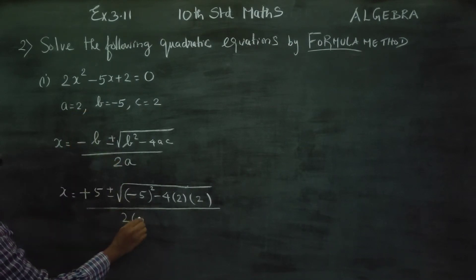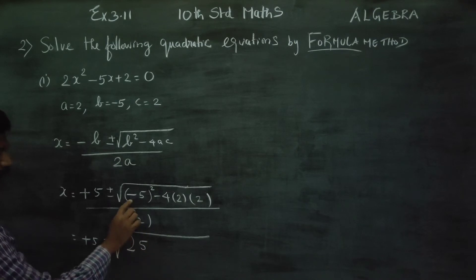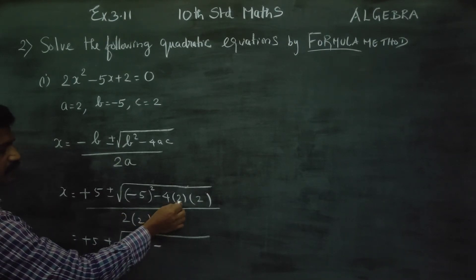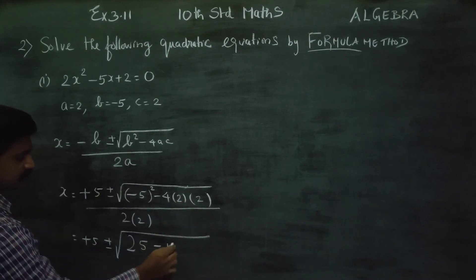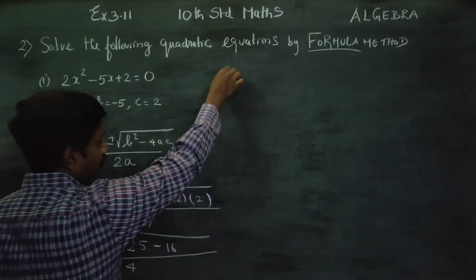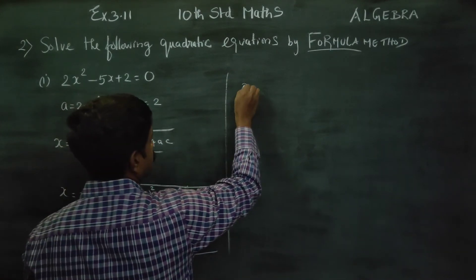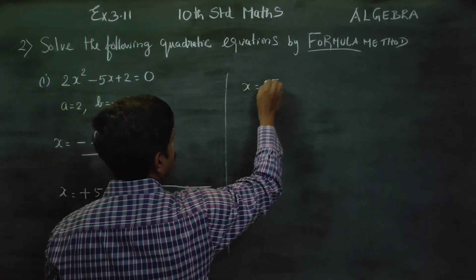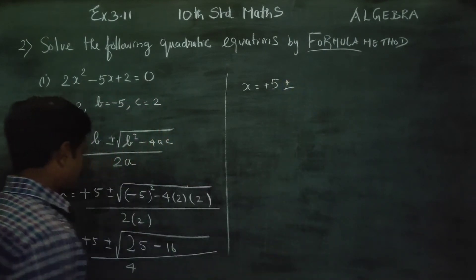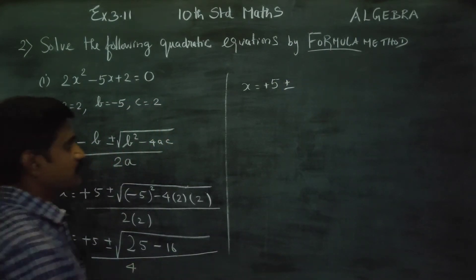Plus 5 plus or minus square root of 5 square, that's 25, minus 4 times 2 times 2, that's 16, by 2 times 2, that's 4. x is equal to plus 5 plus or minus, 25 minus 16, that's 9, by 4.